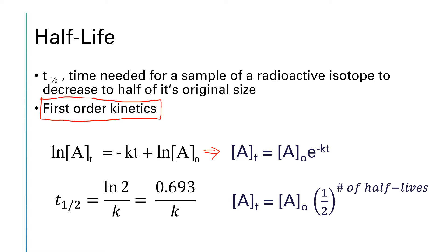Sometimes it's easier to use this alternate form that says that A sub t is equal to A naught times one half raised to the number of half-lives. You calculate the number of half-lives by taking the elapsed time and dividing it by how long a half-life is.